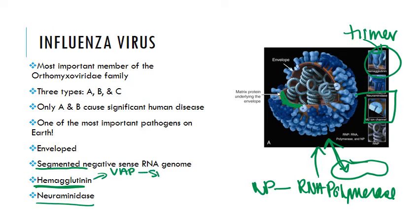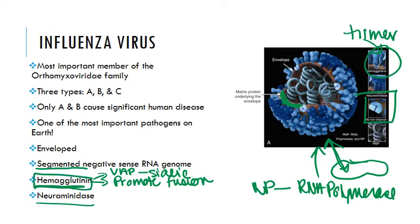Specifically, hemagglutinin binds to sialic acid on host epithelial surfaces. Because it's binding to that acid and increasing acidity, it promotes fusion of the envelope to the cell membrane — not just binding, but fusion is required since this is an enveloped virus. It also causes hemagglutination, which means it binds and aggregates red blood cells, doing so across numerous species including chickens and guinea pigs.